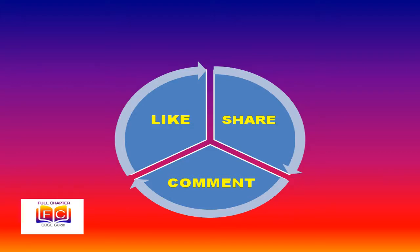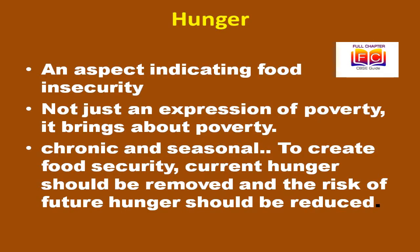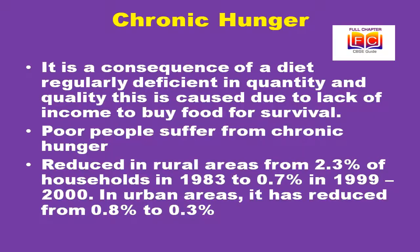Hunger is another aspect indicating food insecurity. Hunger is not just an expression of poverty — it brings about poverty. Attaining food security therefore involves eliminating current hunger and reducing the risk of future hunger. Hunger has two dimensions: chronic and seasonal. To create food security, current hunger should be removed and the risk of future hunger should be reduced.